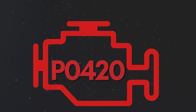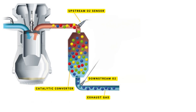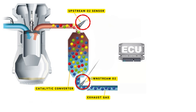Now let's dive into the details of why P0420 gets triggered. The catalytic converter's job is to reduce harmful gases like carbon monoxide, nitrogen oxides, and hydrocarbons. To ensure it's working correctly, the oxygen sensors monitor the oxygen levels in the exhaust gases. The catalytic converter has two oxygen sensors — one located upstream before the converter and one downstream after it. The ECU compares the readings from the upstream and downstream oxygen sensors.